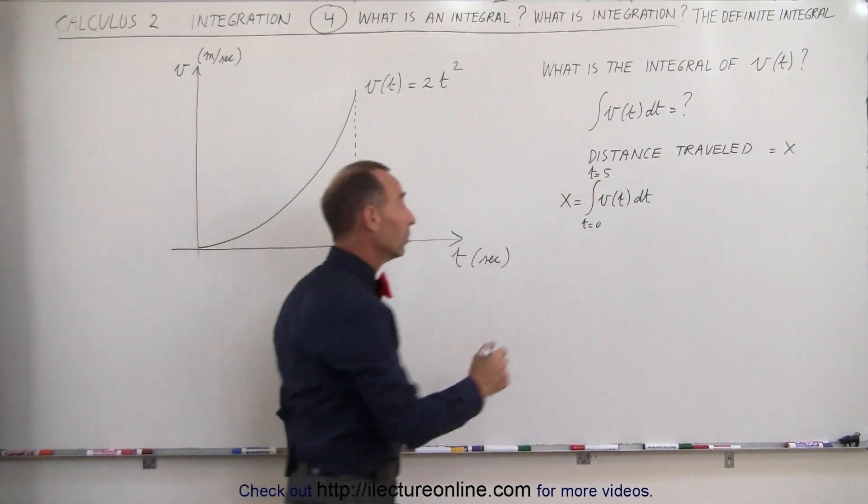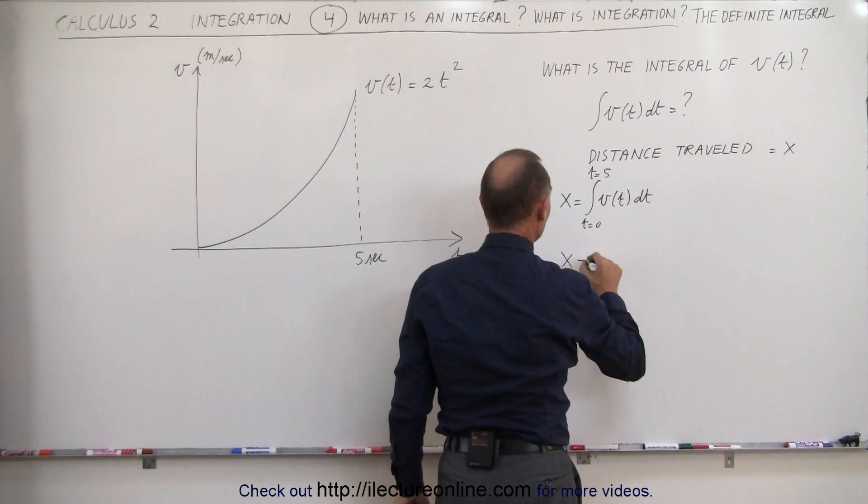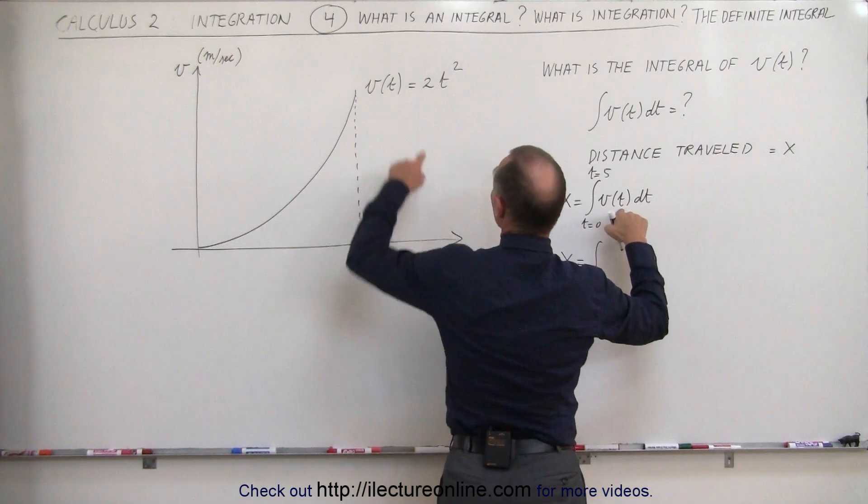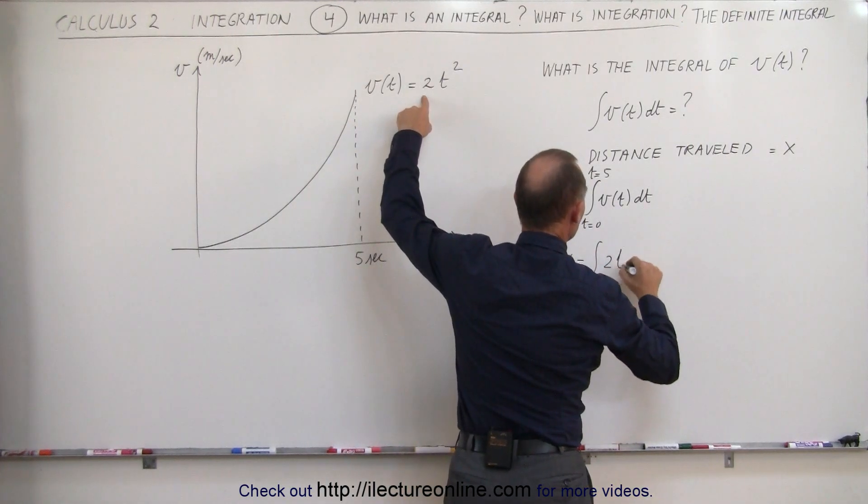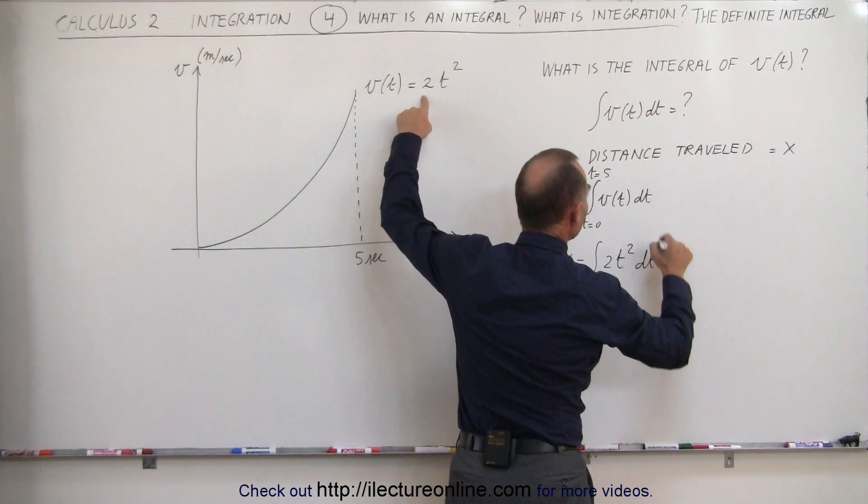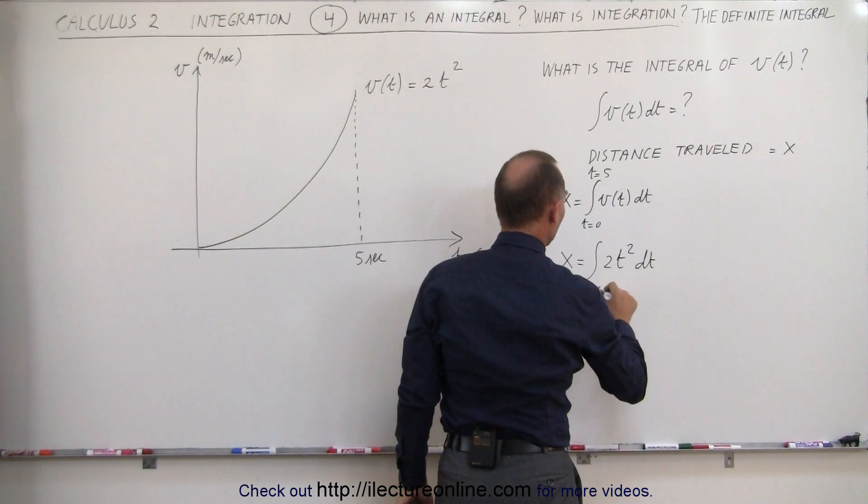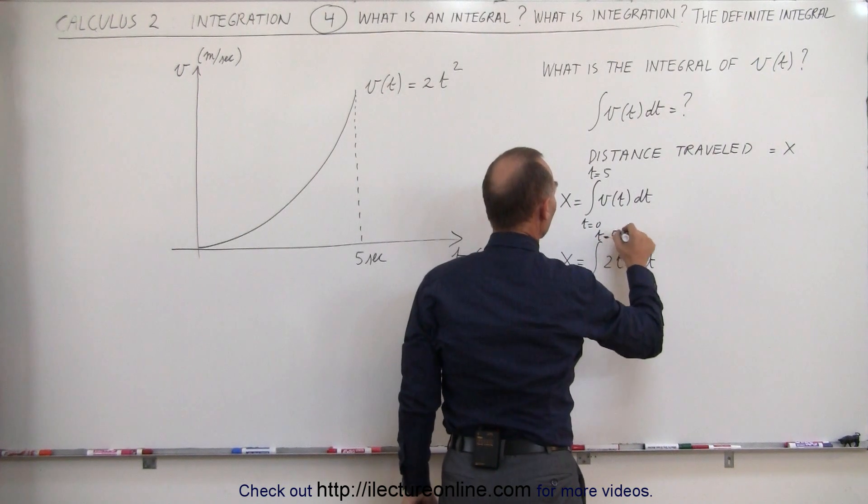So when we integrate that, we get the following. x is equal to the integral. The function, in this case, is 2t squared. We still need the dt from the differentiation from time equals zero to time equals 5.